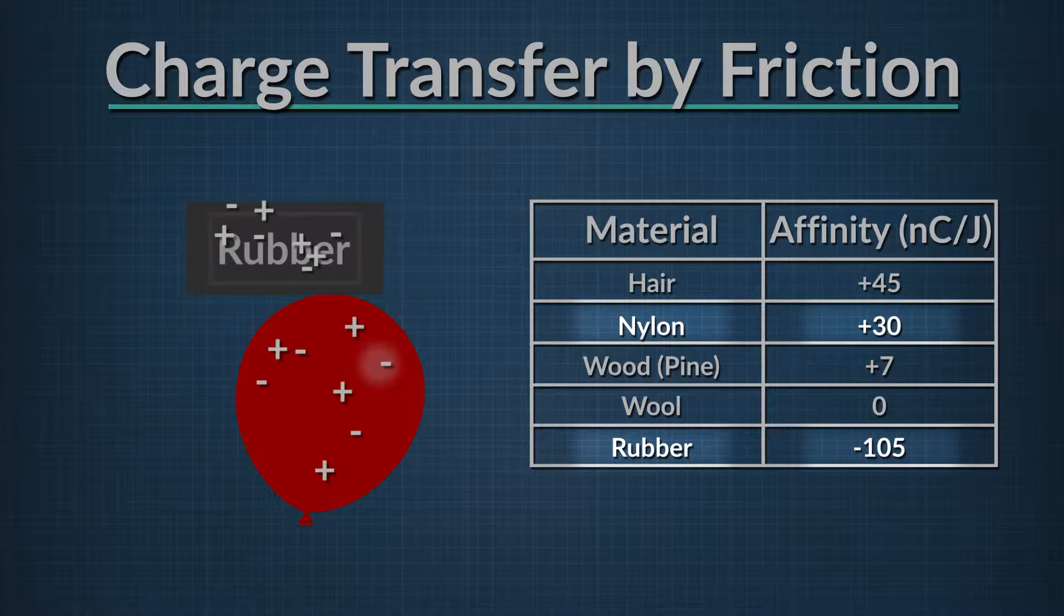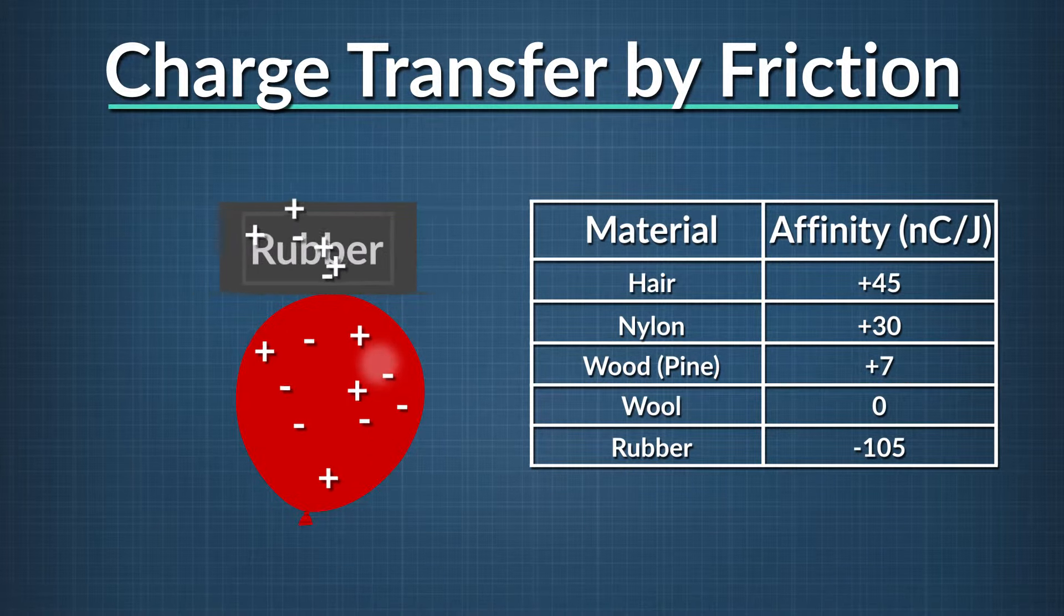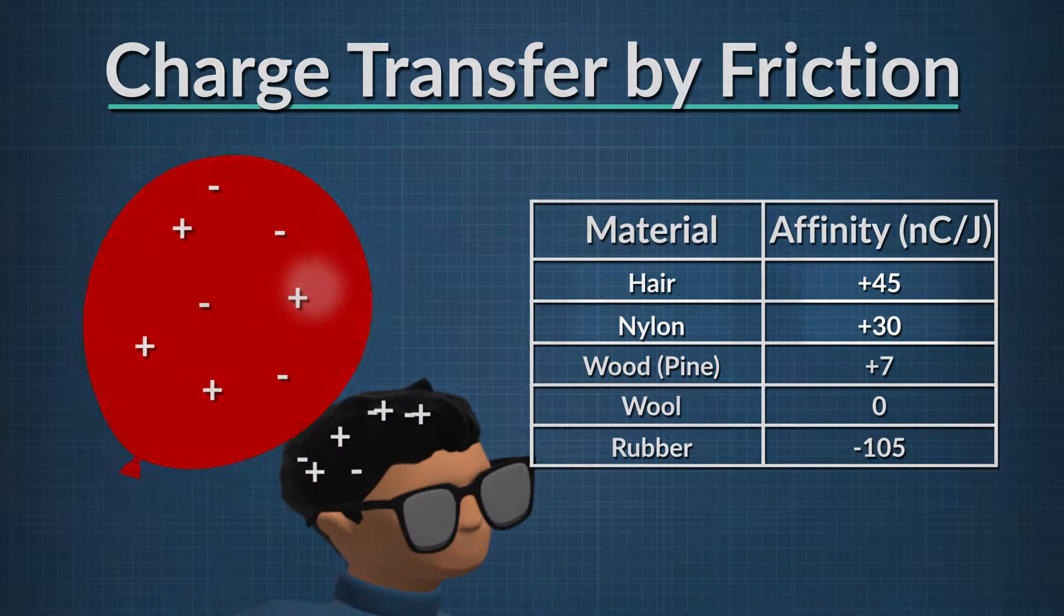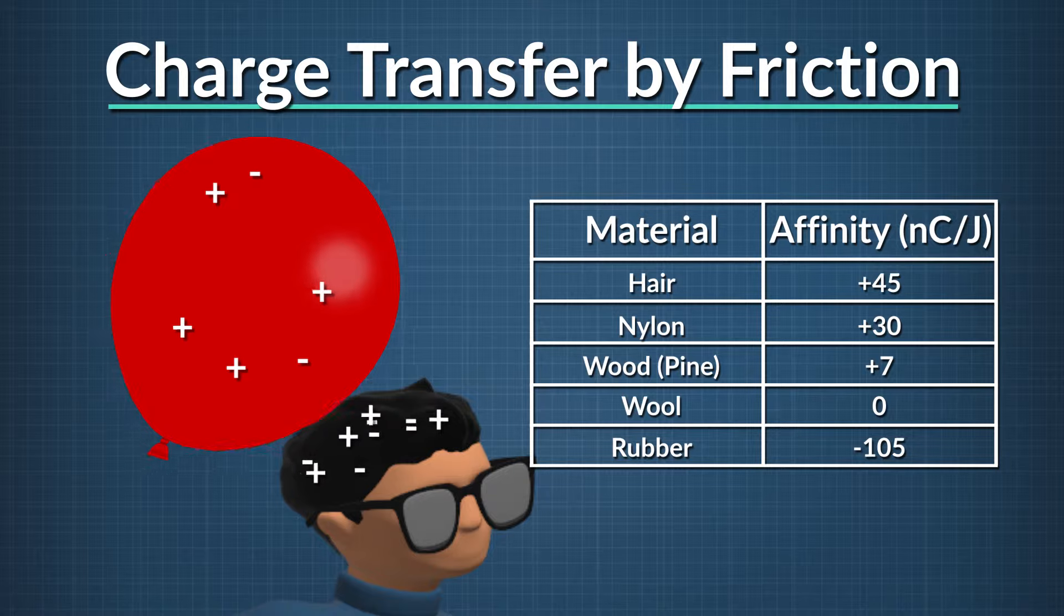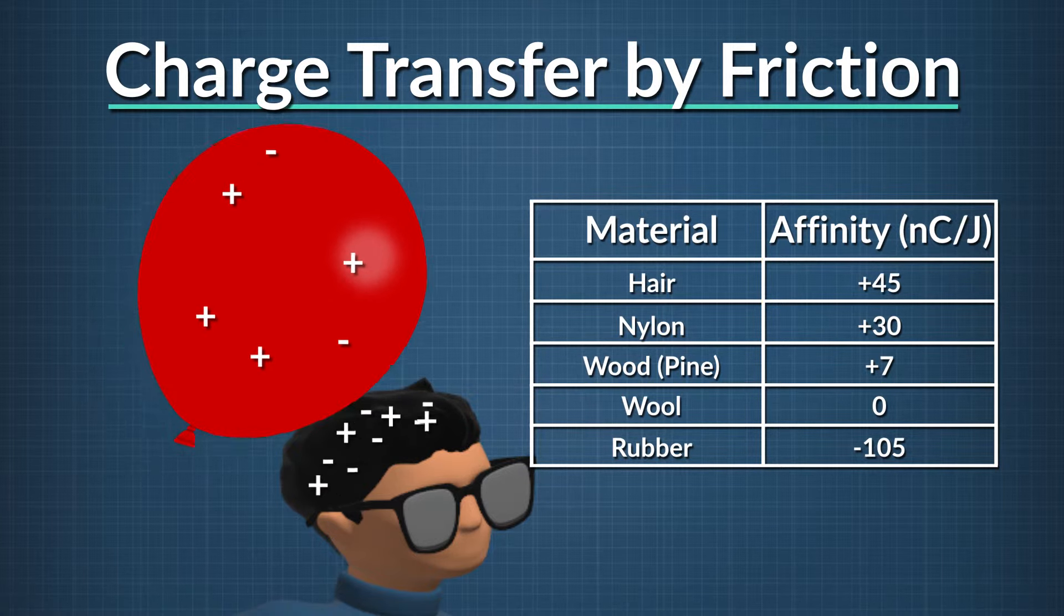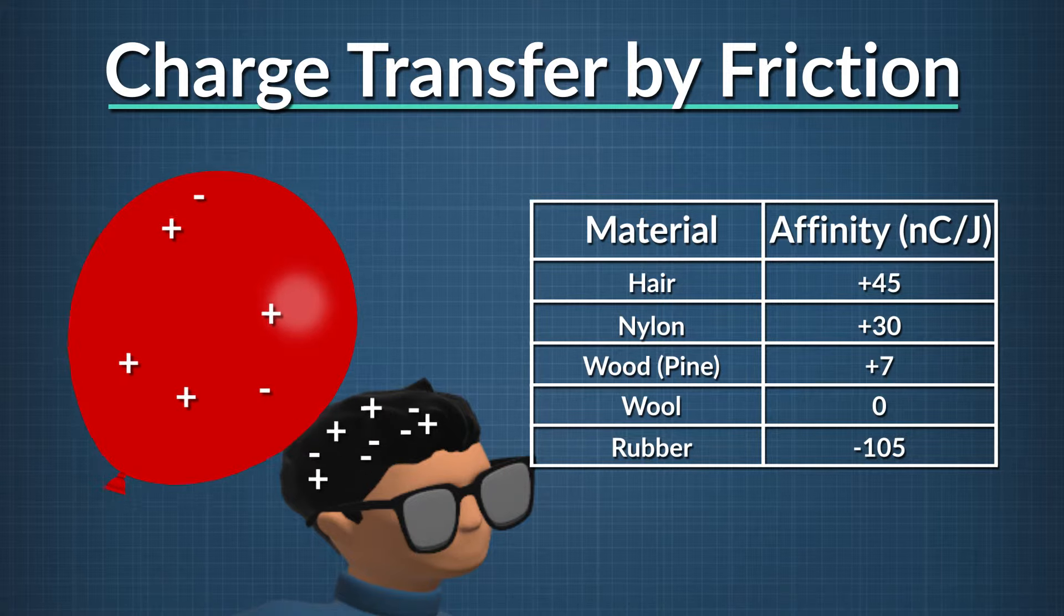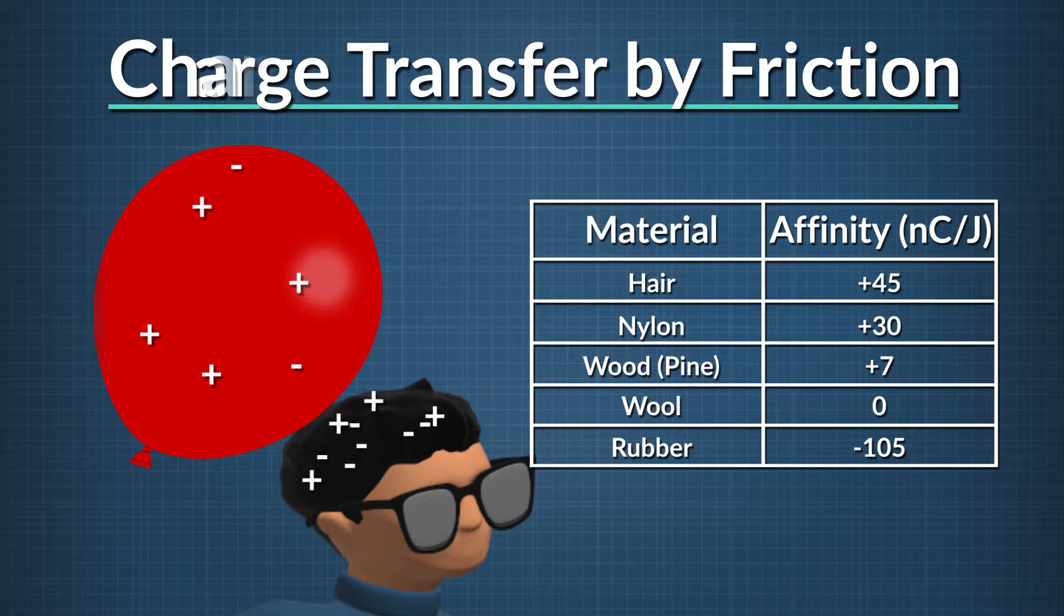This means the rubber ends up with the same amount of excess positive charge. When neutral rubber and nylon come in contact, since nylon is higher up on the list of electron affinity, it takes electrons from the rubber. And lastly, rubbing a neutral balloon on our hair gives our hair extra negative charge. Electrons are more drawn to hair than to nylon. So we can use the triboelectric series, this table, to find out how charges move when two different materials are rubbed together.